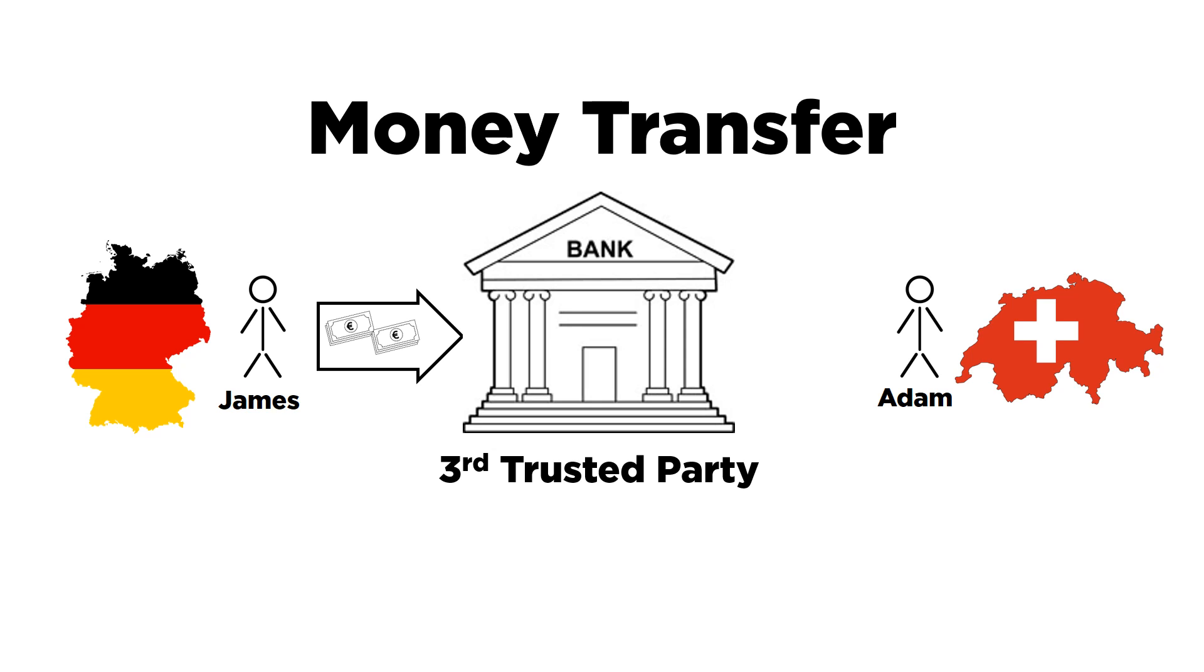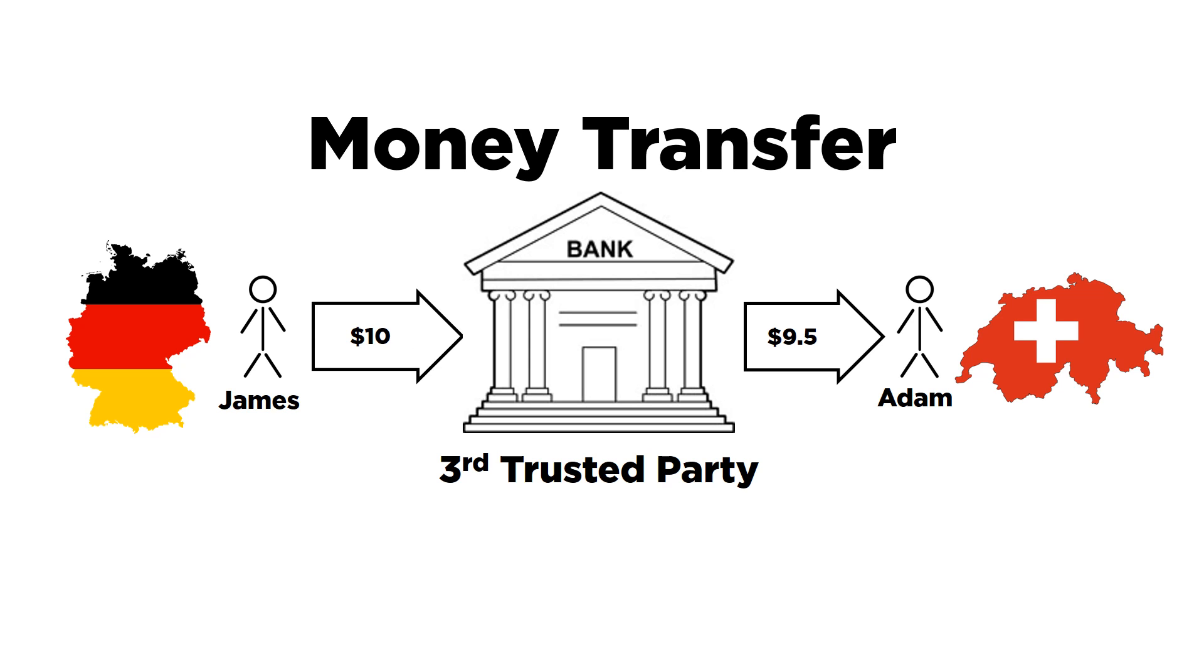The bank identifies Adam as the intended receiver of the money through his bank account, and the money is transferred from James' bank account to Adam's. And for providing this service, the bank charges a fee. This process normally takes two to five days, depending on several factors.